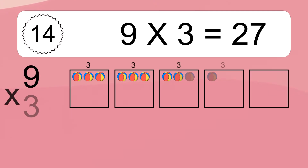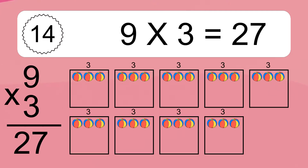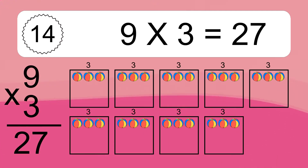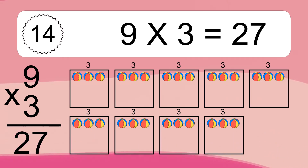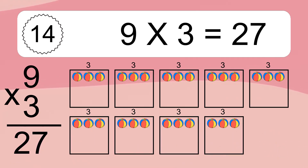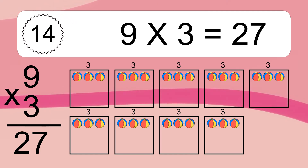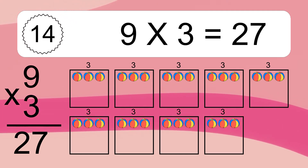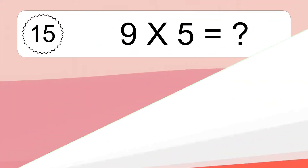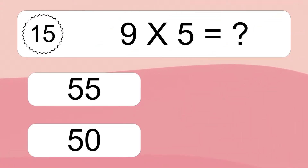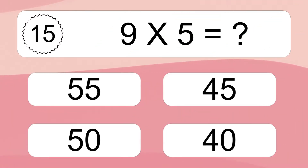9 times 3 equals what? 9 times 3 equals 27. We have 9 boxes, and each box has 3 colorful balls inside. If you count all the balls in all the boxes together, you will have 9 times 3 balls. This equals 27 balls.